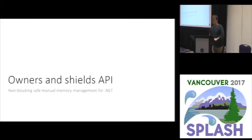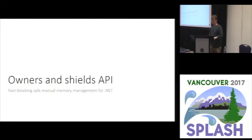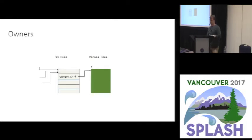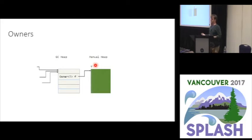We have an API to satisfy these constraints: the Owners and Shields API. This allows us to get non-blocking, safe manual memory management combined with GC in .NET. The rough idea is you have owner pointers — an Owner<T> that points to some object in the manual heap. When the owner pointer goes away, we reclaim the object. So we've done unique pointers — but that's kind of restrictive.